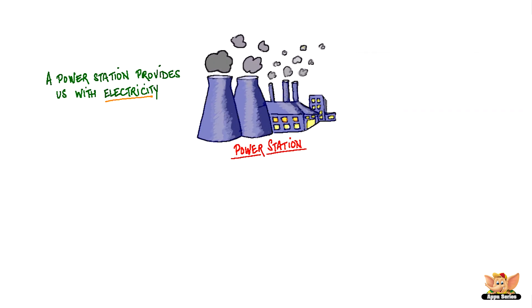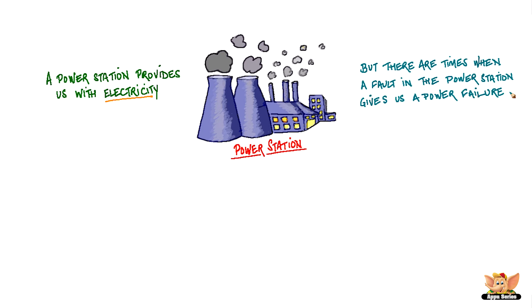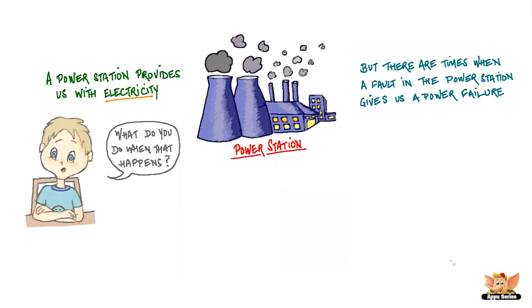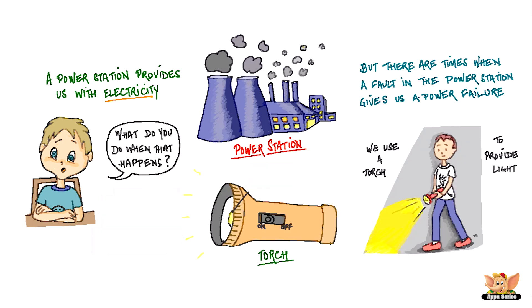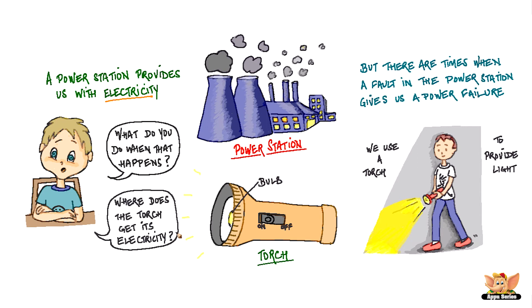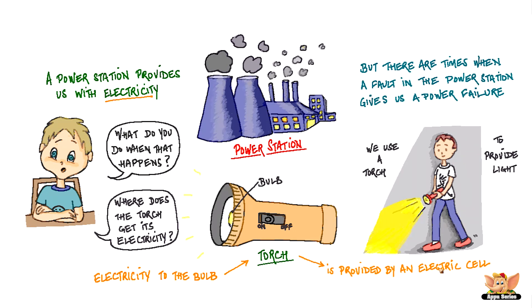A power station provides us with electricity. But there might be times when some fault in the power station gives us a power failure. In such situations, we use a torch to provide light. A torch has a bulb that lights up when it is switched on. But where do you think the torch gets its electricity? The electricity to the bulb in the torch is provided by an electric cell.